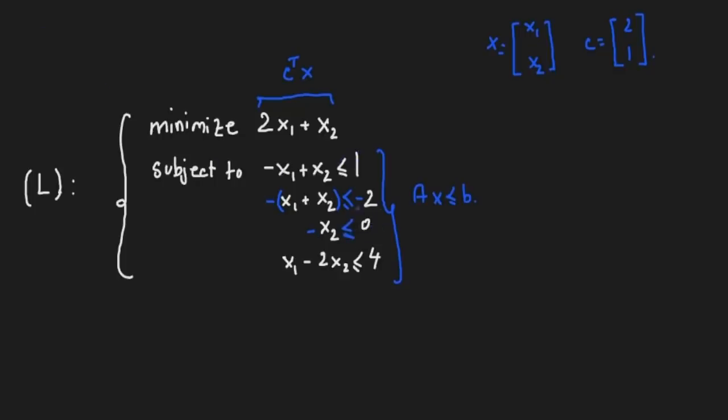Now we could form our A matrix as such. The first constraint could be stacked in the first row of A as -1, 1. So -1, 1 comes from the coefficients of the first constraint, and likewise if you fill b, then the first entry of b would be the right hand side of the first constraint, that is 1.